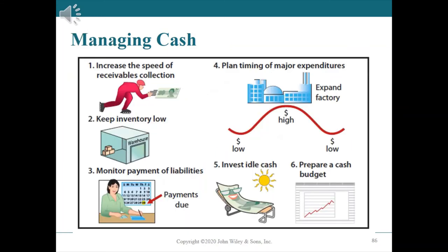Managing cash. Many companies struggle not because they cannot generate sales but because they cannot manage their cash. The following basic principles of cash management help ensure companies have sufficient cash: one, increase the speed of collection on receivables; two, keep inventory levels low; three, take advantage of credit periods; four, plan the timing of major expenditures; five, invest idle cash; and six, prepare a cash budget.